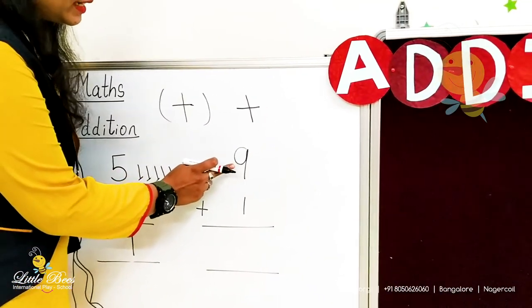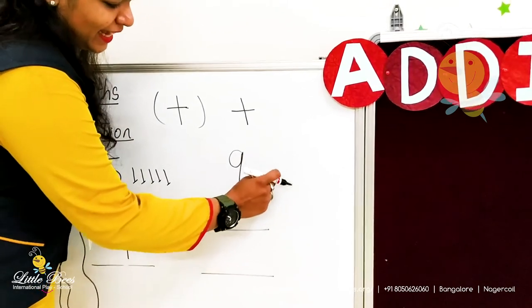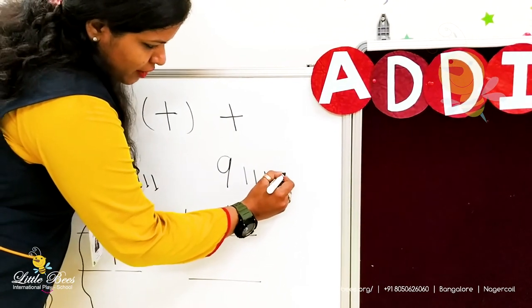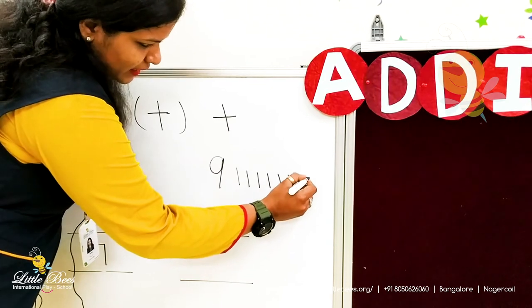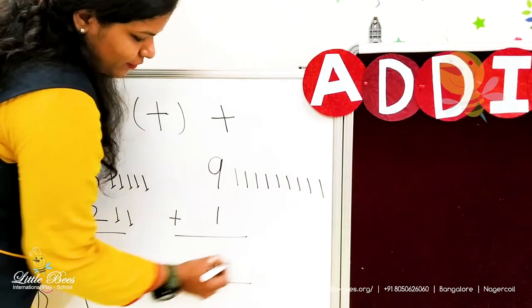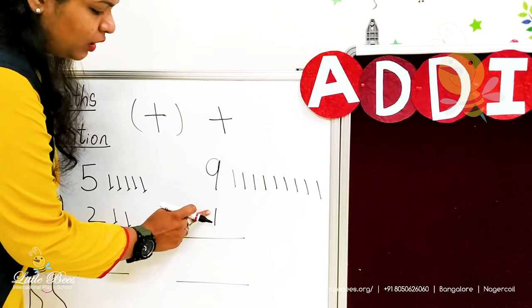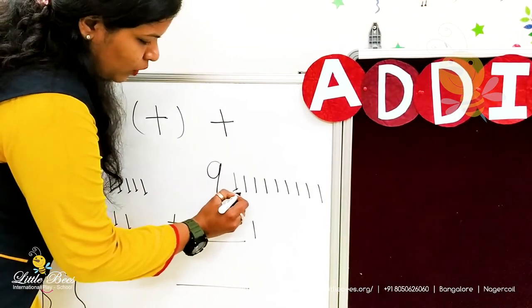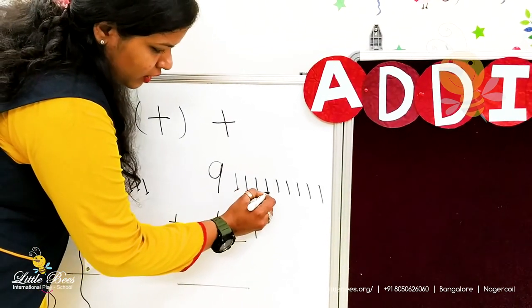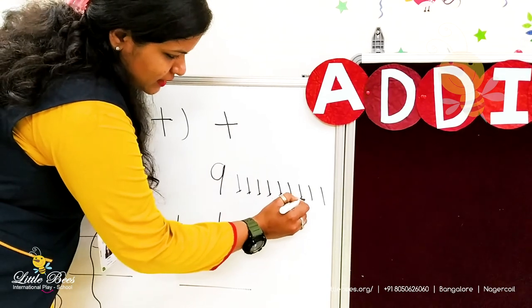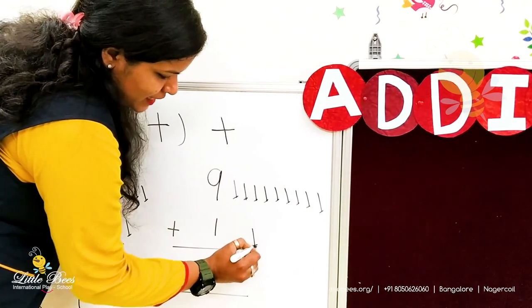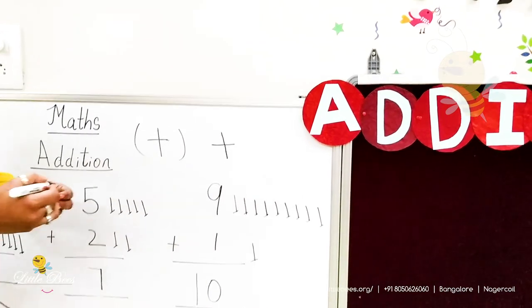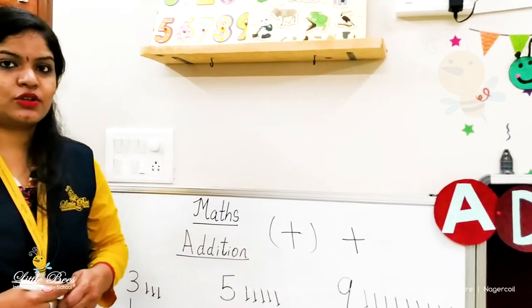For nine plus one: we draw nine lines — one, two, three, four, five, six, seven, eight, nine — then one more line. Count all together: one, two, three, four, five, six, seven, eight, nine, ten. Nine plus one is ten. Kids, did you all understand the concept of addition?